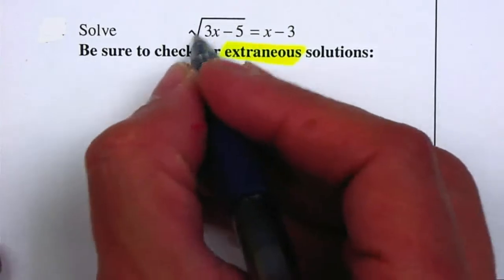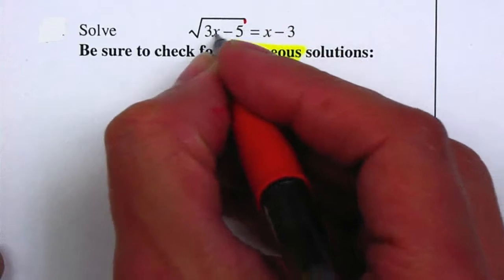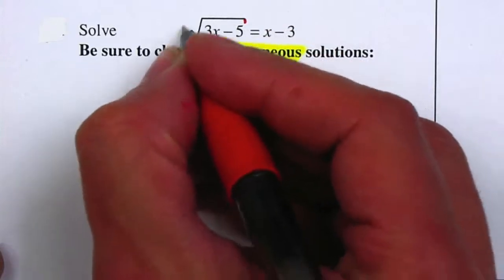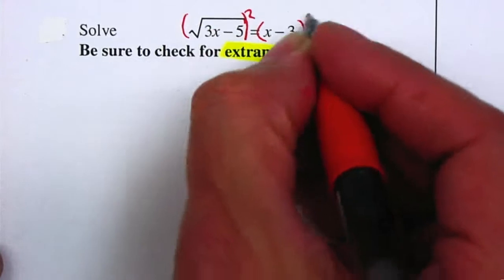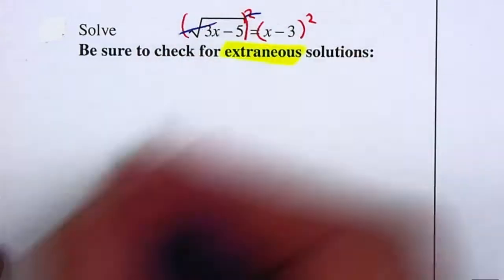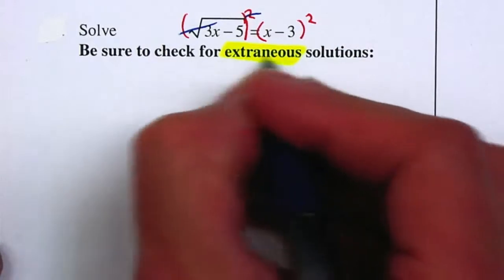So first, I want to be able to get rid of the square root. There's nothing else on the left hand side except for the square root. The 3x minus 5 is inside. So to cancel it, we're going to do the opposite operation which is to square. The square root and the square cancels. And whenever you square both sides, that's where we start getting extraneous solutions.